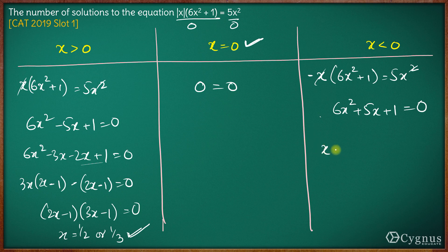Once you solve this, the value of x comes out to be minus 1/2 and minus 1/3. Since both these values are less than 0, both these values are also accepted.